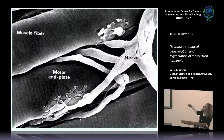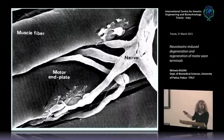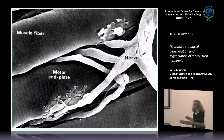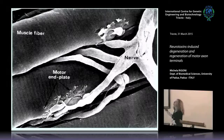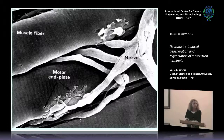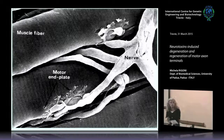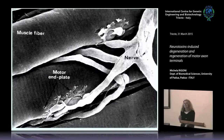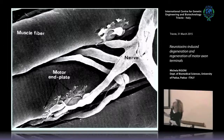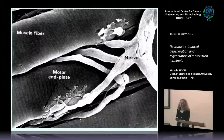We also have terminal Schwann cells that do not produce myelin but are in very close contact with the nerve. They have an important role not only in the stability of the junction and its development, but when the terminal is injured, these Schwann cells become very important for their help in nerve regrowth. Due to its exposure and lack of a protective barrier, the neuromuscular junction is the target of many toxins.